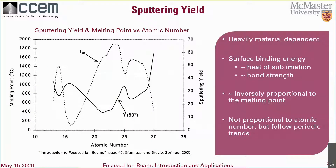Sputter yield describes how fast we are removing ions from the material — this is your relative milling rate and is heavily material dependent. With different materials, you can more than double your FIB working time. The yield is governed by the surface binding energy, which you can approximate by the heat of sublimation and bond strength. For something more familiar, sputter rate is inversely proportional to the melting point. As you can see in the plot, it's not proportional to atomic number but does follow general periodic trends.